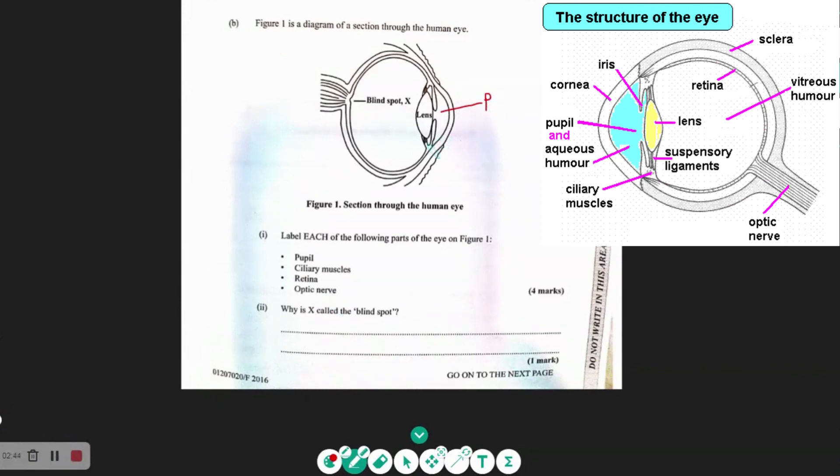Where's the ciliary muscles? So we know we have ciliary muscles as well as suspensory ligaments. This white part here, this would be the ciliary muscles. So we have ciliary muscles at the top and the bottom. So we just have to label one. So that would be the ciliary muscles.